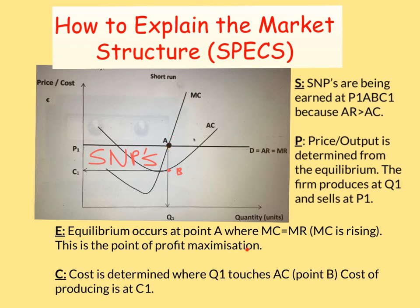C represents cost. Cost is determined where Q1 touches the average cost curve at approximately point B, and we bring that over onto the price and cost axis — the cost of producing is at C1. The reason we earn supernormal profit is that C1 is well below P1, and that's why firms in perfect competition earn supernormal profits in the short run.